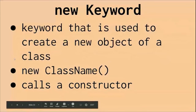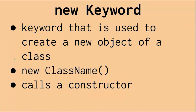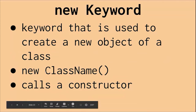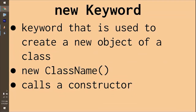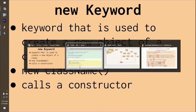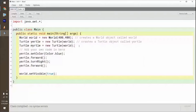The new keyword is used to create a new object and it calls a constructor. It's always new, and then the constructor — whatever the class name is — which matches the constructor name. Really it should say new constructor name, but it's always the same as the class name anyway. And we used the new keyword right here to make new objects.